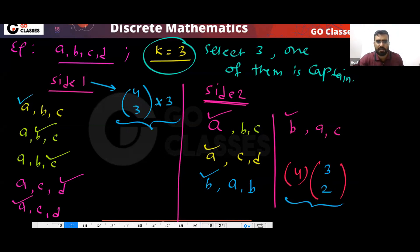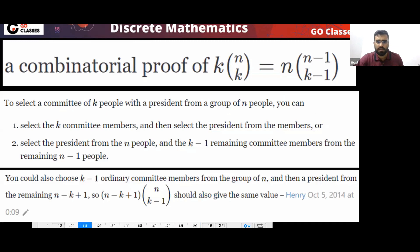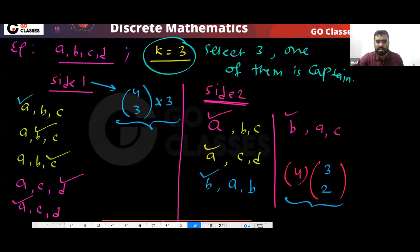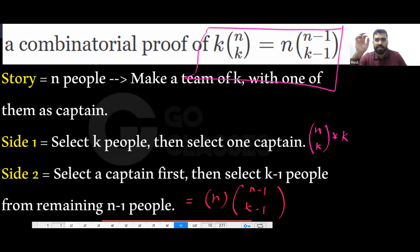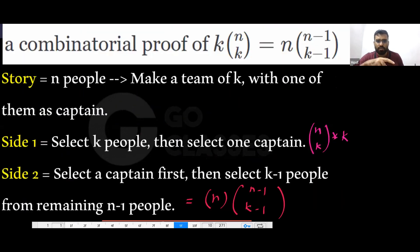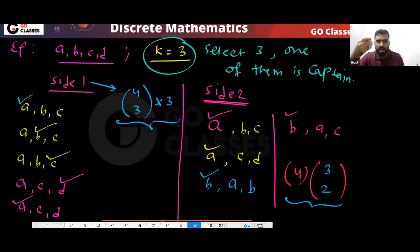This is the idea. Is this clear? Now you know how to create a story. This story was created by one of our students — I shared it in the group. They sent the two sides of the story and it made me very happy, because now you know how to create a story for combinatorial identities.